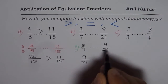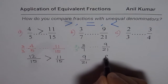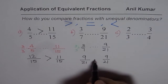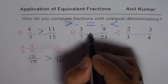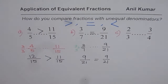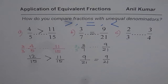The other fraction is 9 over 21. They are exactly the same, so 3 over 7 is equal to 9 over 21.